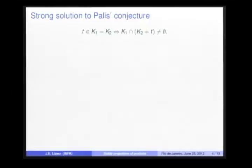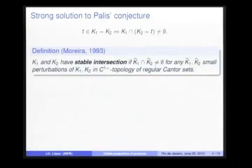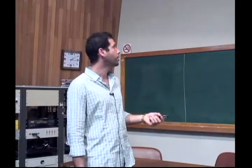Well, the arithmetic difference of two regular Cantor sets is closely related to the intersecting property after a translation, as this equivalence says. In order to solve this conjecture, Moreira in 1993 introduced the concept of stable intersection. Two regular Cantor sets have a stable intersection when they are intersecting after any perturbation in the topology of the C¹⁺ regular Cantor sets.